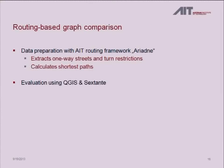So we thought of some more routing-based graph comparison approaches. There is a first preparation step, currently done with our in-house routing software, which extracts one-way streets and turn restrictions from both graphs and is also used to calculate shortest paths. The evaluation which follows is then done in QGIS and Sextante.